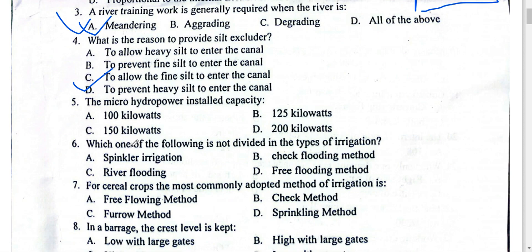Here is a question: which one of the following is not provided in the types of irrigation? Surface irrigation includes sub-surface irrigation, sprinkler, check, border (furrow), river flooding, and free flooding. These are the types of surface irrigation.